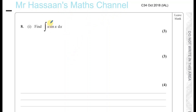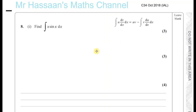Here we have a product of two separate functions multiplied together. In this case we have to use integration by parts, which is basically derived from the product rule in differentiation. This is something for which the formula is given in the formula book that you get in the exam.